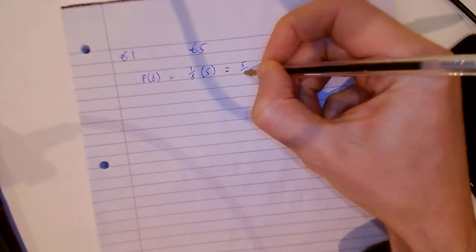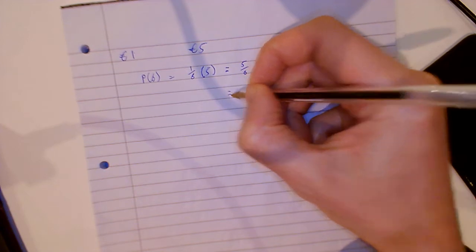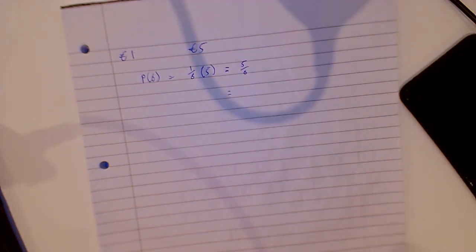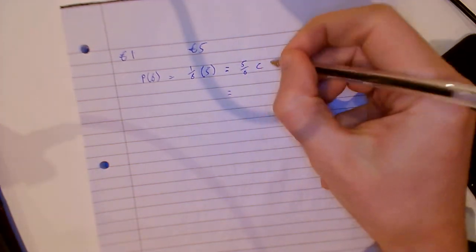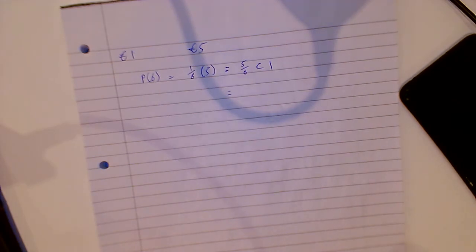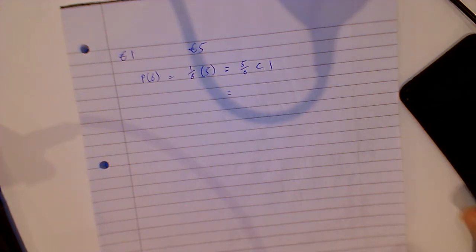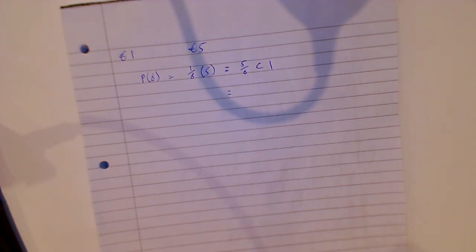That would be five-sixths, and that would be less than one. So we'd expect to lose money. Now when we're dealing with money we would put that into our calculator.